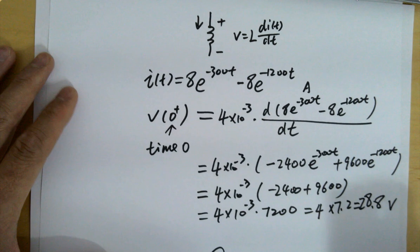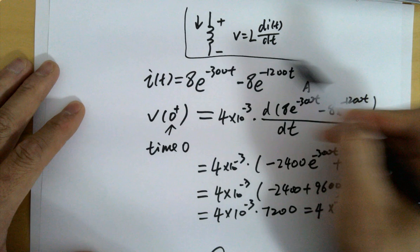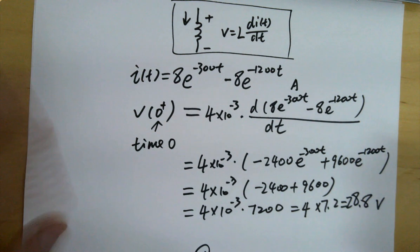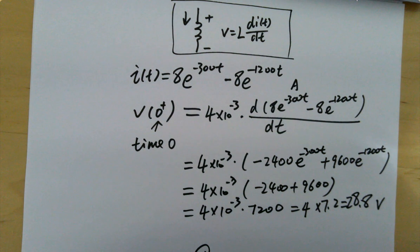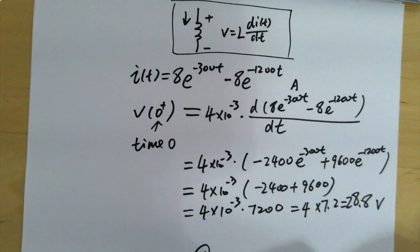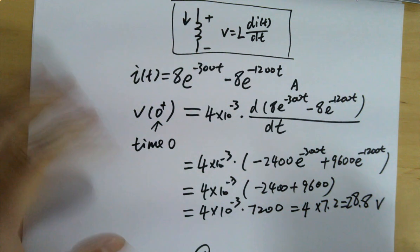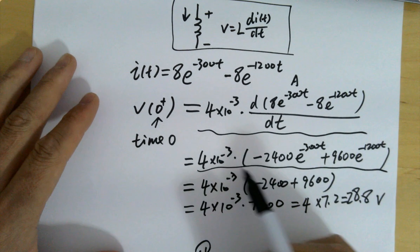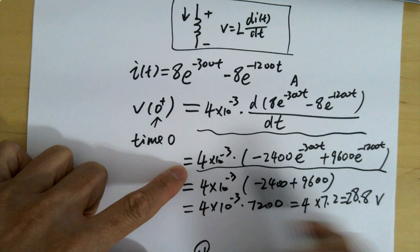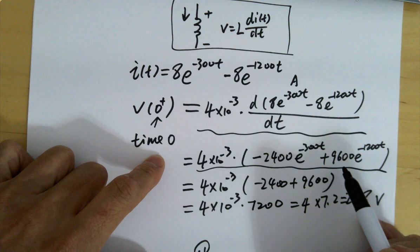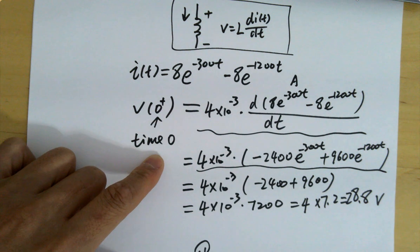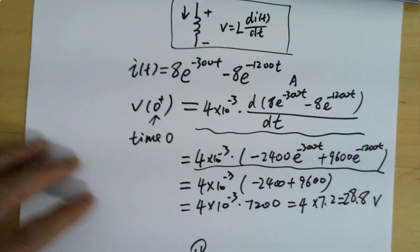This is a good example of how to use the voltage-to-current equation of an inductor to calculate voltage from current. A follow-up question might ask: find the time when the voltage across the inductor is zero. To do that, just set the voltage expression equal to zero and solve for t.